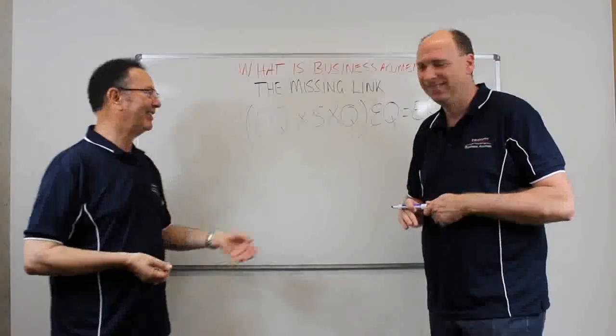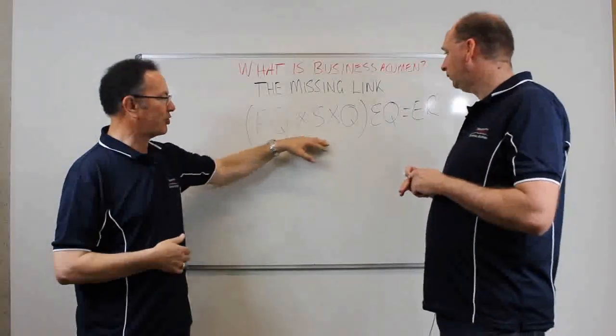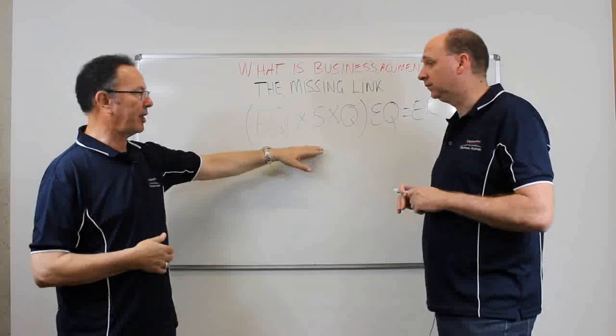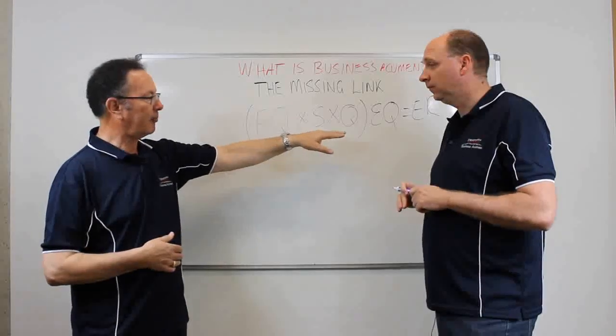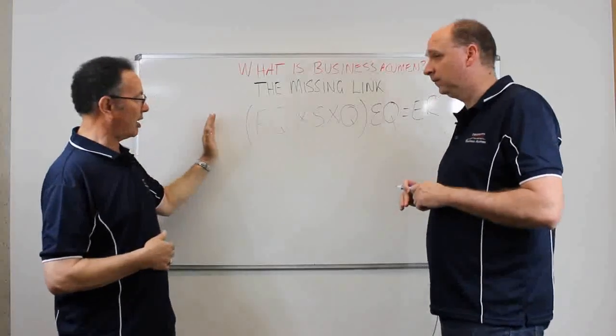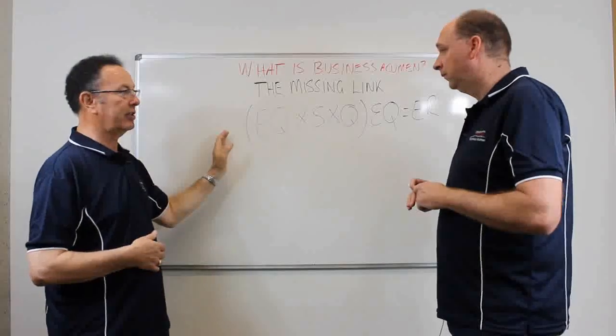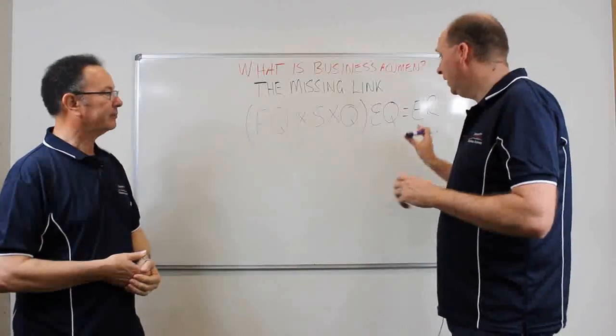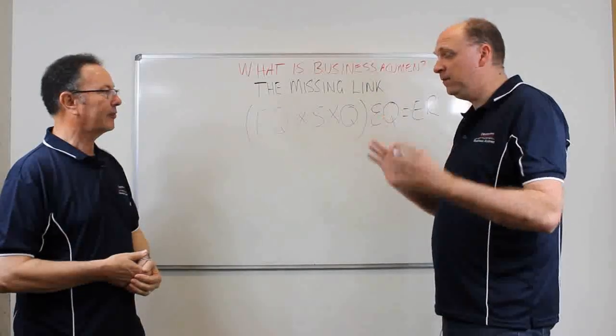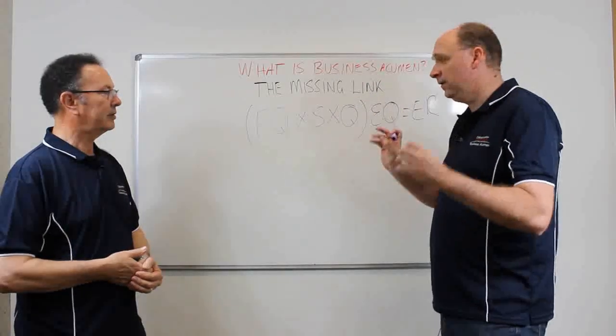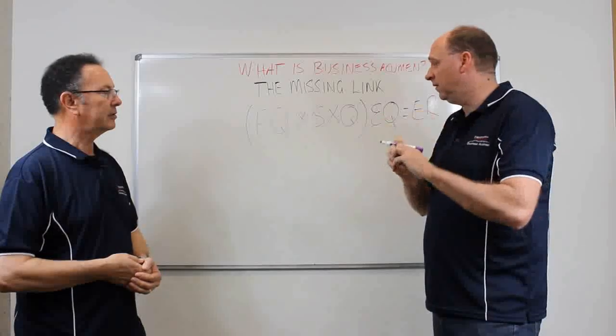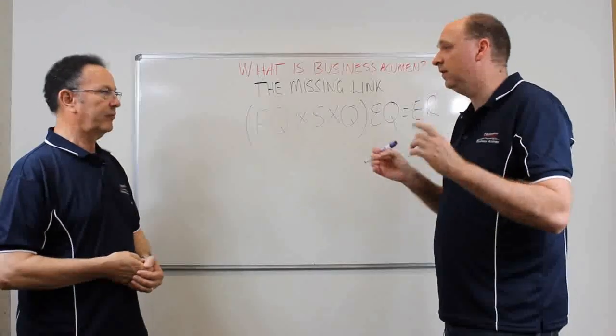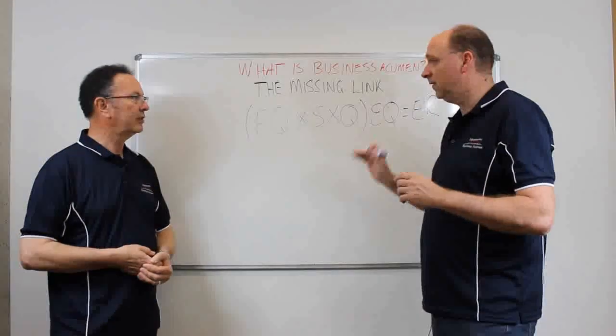I suppose in terms of the strategic execution, we'll expand on that a bit more too, but the main thing is if you think about the combination of all of that, that's what's the missing link. It's a combination of everything. If you're missing one part, then your chain is only as strong as your weakest link.